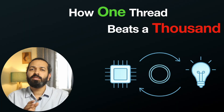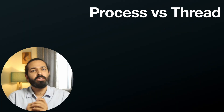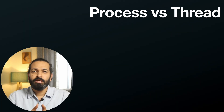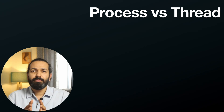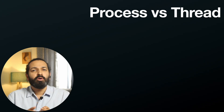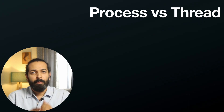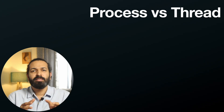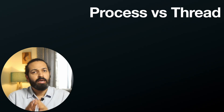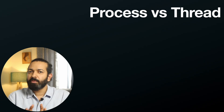Let's start from the very beginning: Process vs Thread. Before we jump into event loops, let's revise the basics. When we run a program, the operating system creates something called a process. A process is like a container — it has its own memory space, its own resources, and complete isolation from other processes.